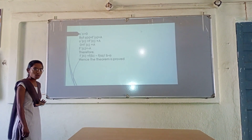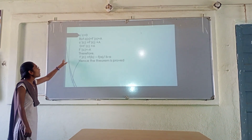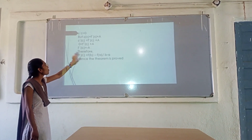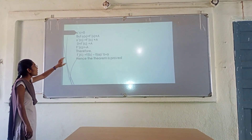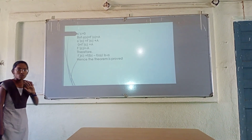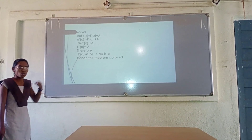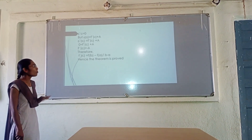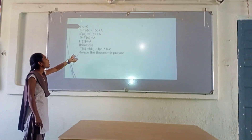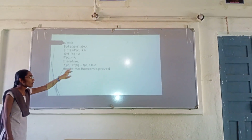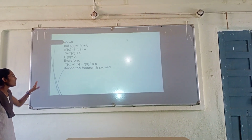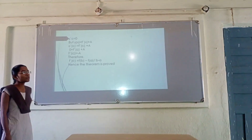Substituting the value of phi'(c) = 0, we get f'(c) = minus A. Substituting the value of A, we get f'(c) = [f(b) minus f(a)] divided by (b minus a). Therefore, the theorem is proved.